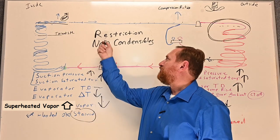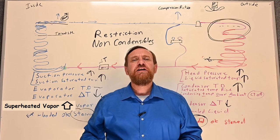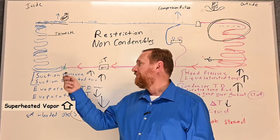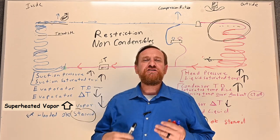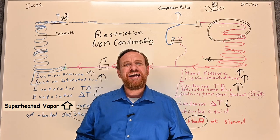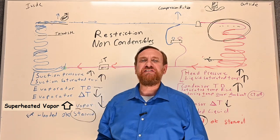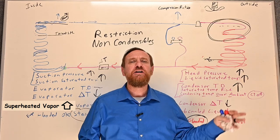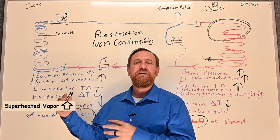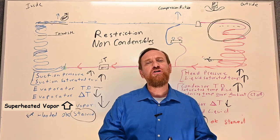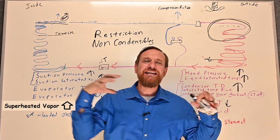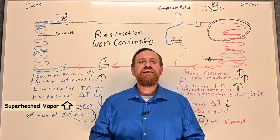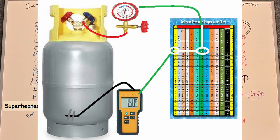Since the symptoms are very similar between a restriction and non-condensibles — you can check delta T across the filter dryer or at different spots on the liquid line — but if the restriction is at the metering device, a lot of times you just have to open it up. If we have to open that metering device anyway, that means we have to recover all the refrigerant from the system regardless.